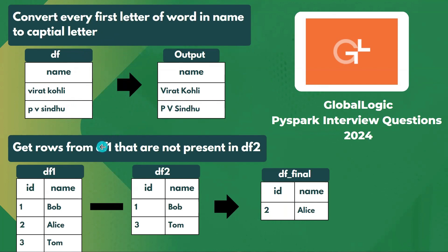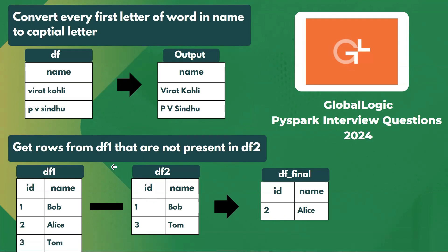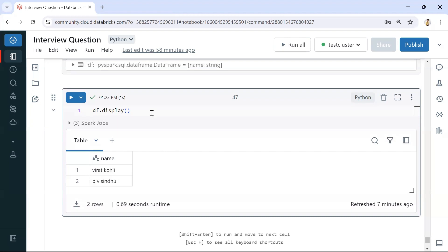The second question: we need to get rows from dataframe one that are not present in dataframe two. Dataframe one has IDs one, two, three, but dataframe two has only IDs one and three. So ID two is present in dataframe one but not in dataframe two — that kind of record we need in the output. We'll solve both questions using PySpark.